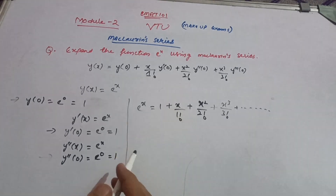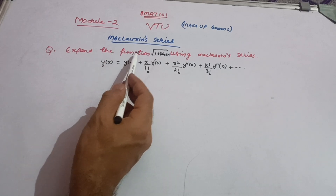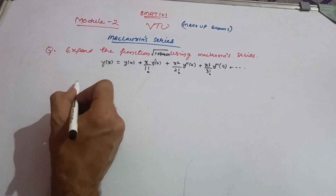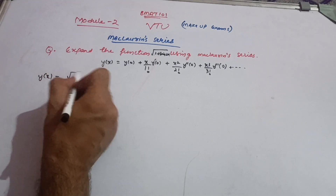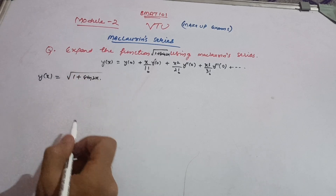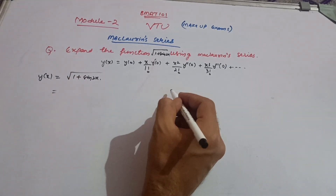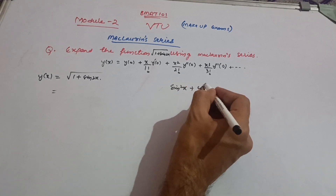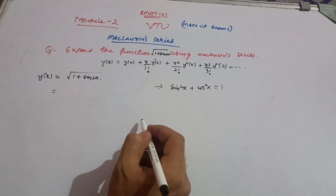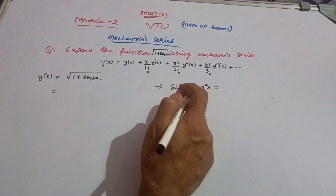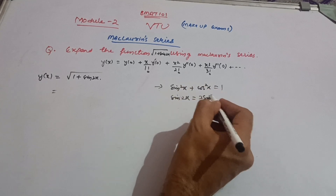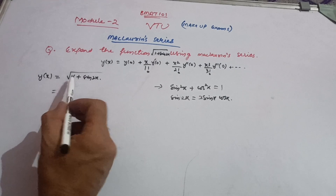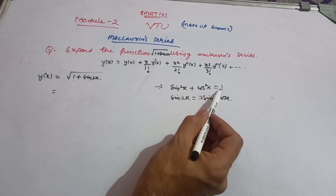Now let us follow another problem. The next question is: expand √(1 + sin 2x) using the Maclaren series. The Maclaren series formula is the same as before. Here y(x) = √(1 + sin 2x). You should know two formulas: sin²x + cos²x = 1, and sin 2x = 2 sin x cos x. These two formulas are needed for this question.